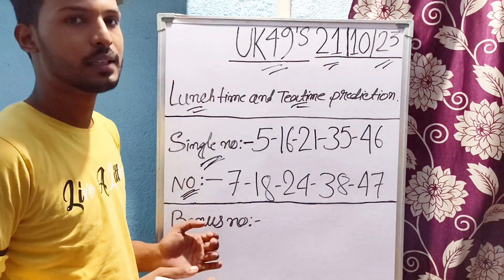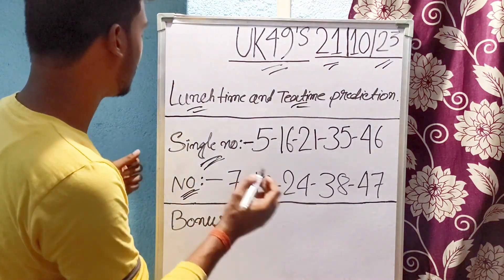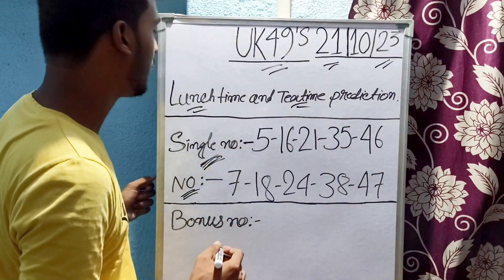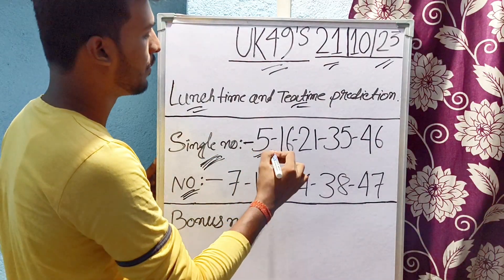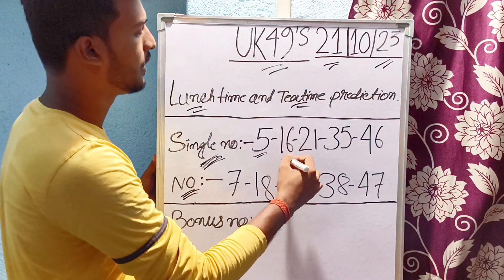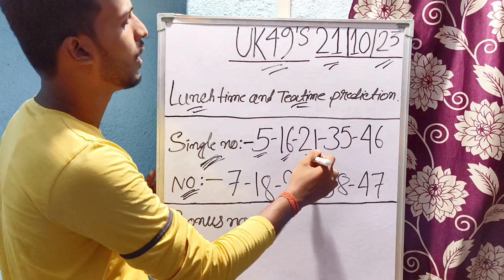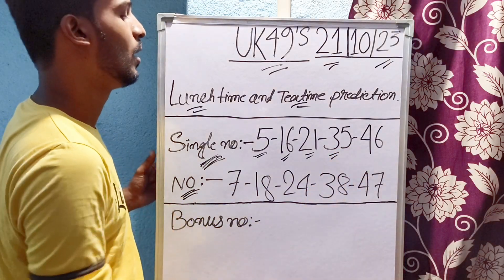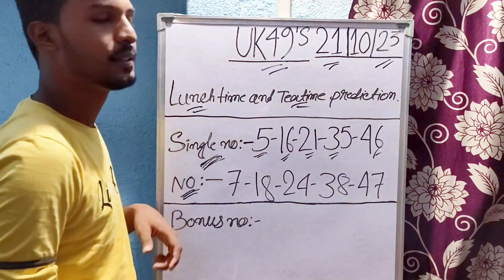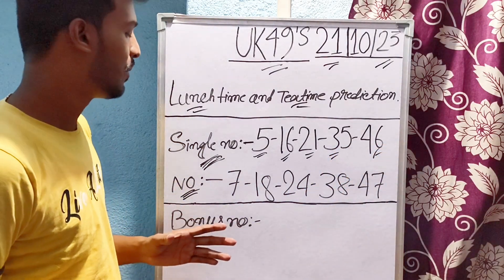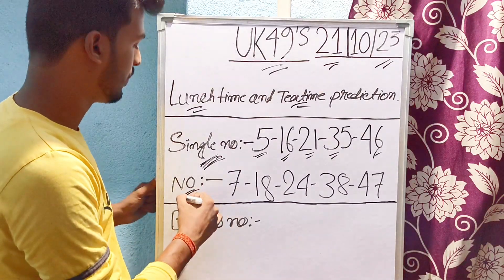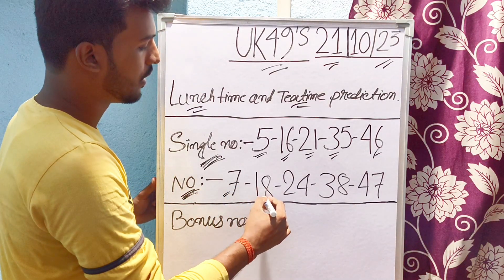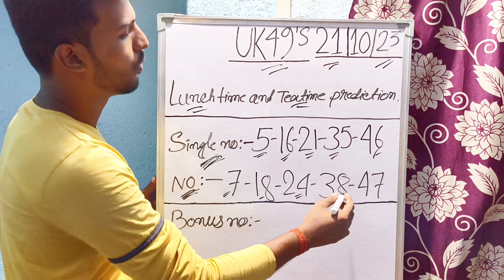Lunchtime and tea time first Partition repeat numbers: 5, 16, 21, 35, 46. Second Partition lunchtime and tea time numbers: 7, 18, 24, 38, and 47.